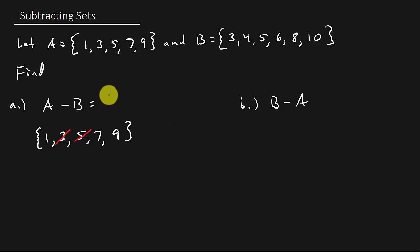So, A minus B is equal to 1, 7, 9. And that's your answer. All you have to do is just write down this first set here, and then take out the elements that are in this one. That's it.